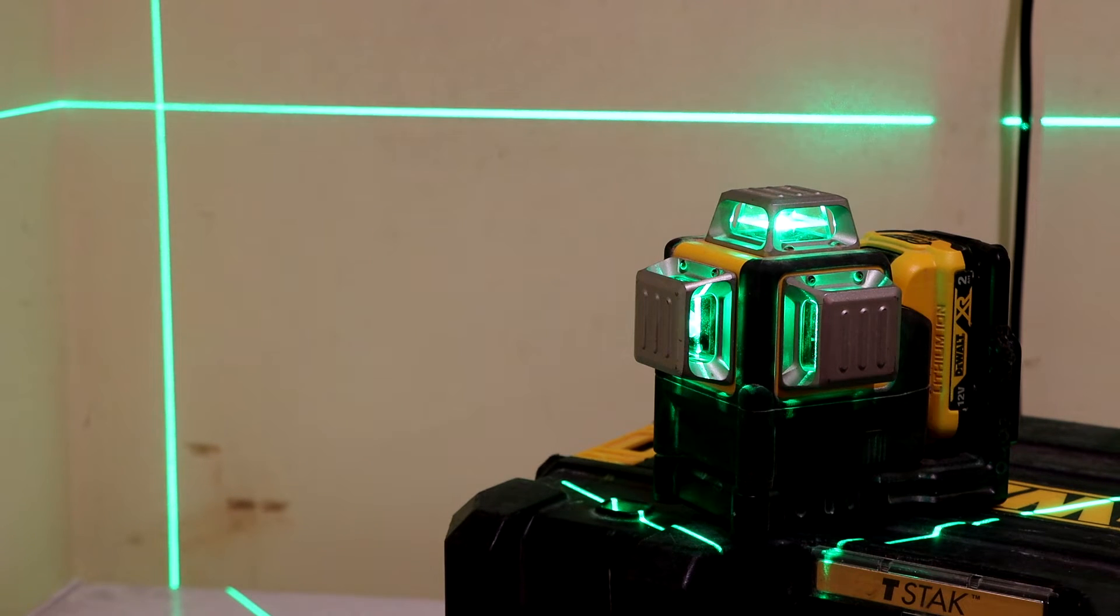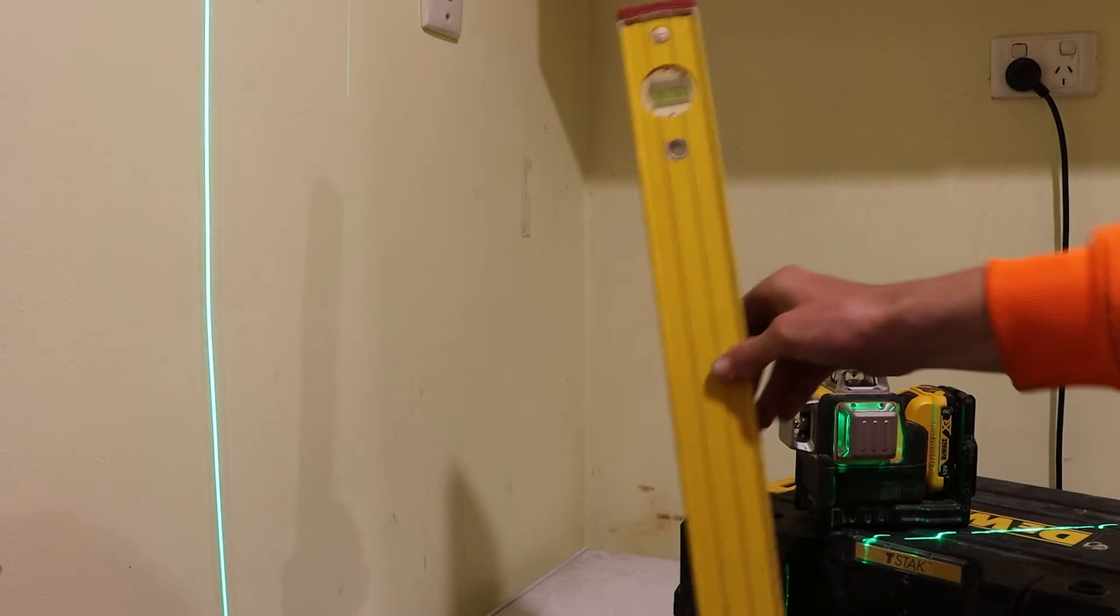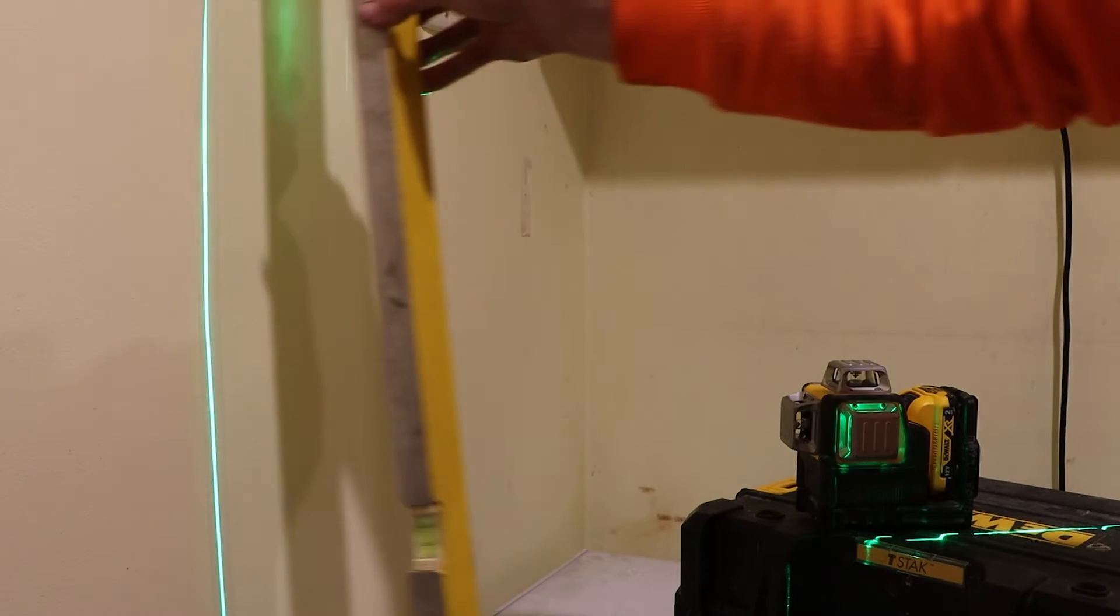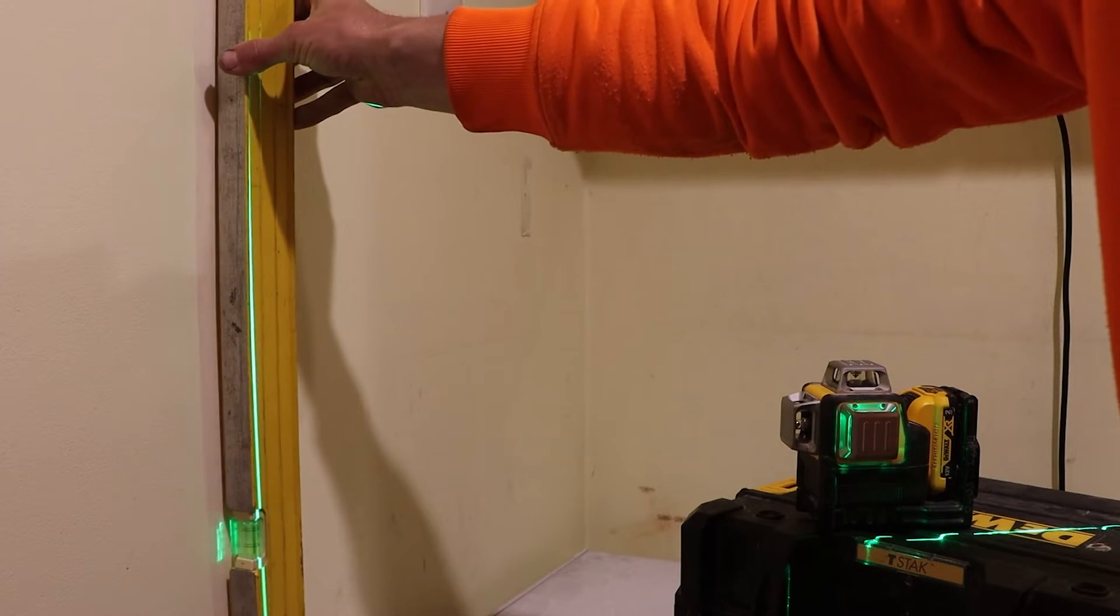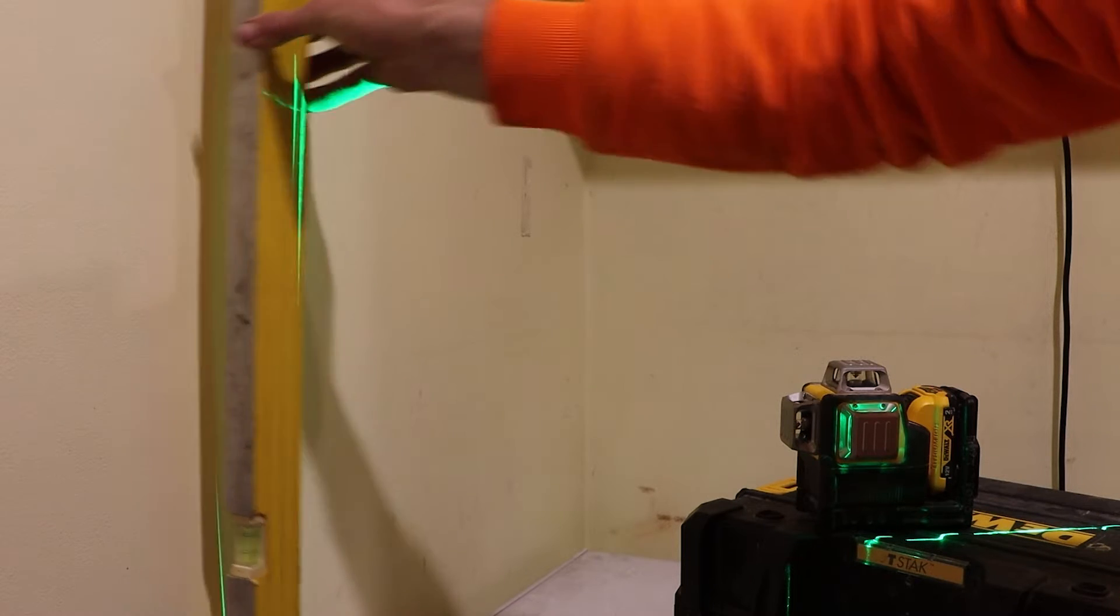The first way you can check if your laser level is accurate is by shining it against the wall and checking it with a spirit level. When you raise your spirit level up to the line, it can be a bit of a nuisance trying to get that laser to shine on the wall without blocking it with your level.